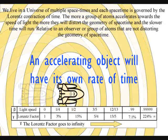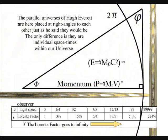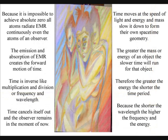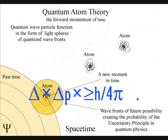We know time is a variable because we have time dilation when objects accelerate towards the speed of light. And we also have time dilation around objects of great mass. Time moves at the speed of light, and energy and mass slow it down to form their own space-time geometry. The greater the mass or energy of an object, the slower time will run for that object.